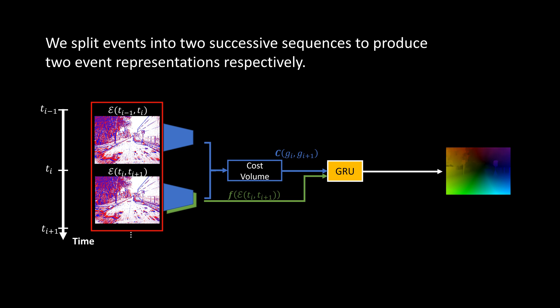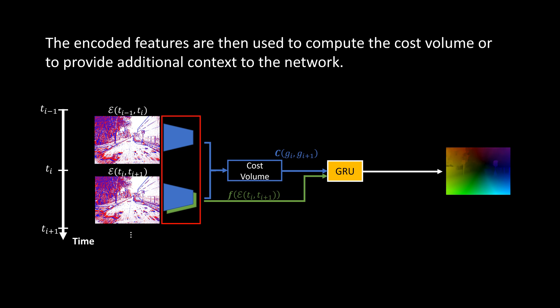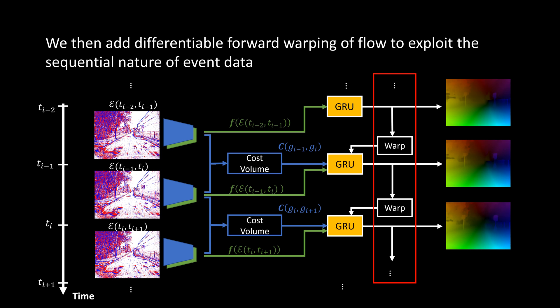We start by splitting events into two successive sequences to produce two event representations respectively. The encoded features are then used to compute the cost volume or to provide additional context to the network. Finally, we propose a differentiable forward warping scheme to exploit the sequential nature of event data, and incorporate it to fine-tune the network to further increase performance without any additional parameters.